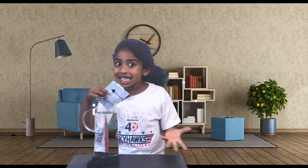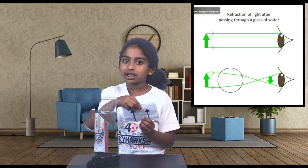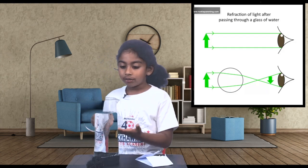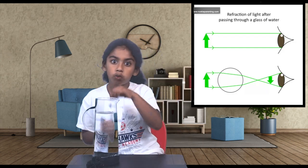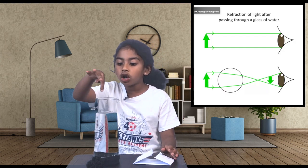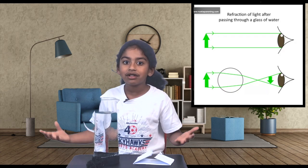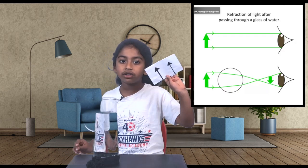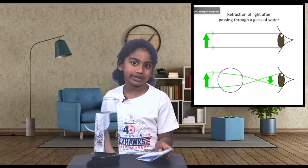Now I'll explain about this. So normally when you just look at this paper like this, all the light waves just go straight into the air. But when you put it behind the water, the light waves are going through one layer of glass, then water, then another layer of glass. That's why this turned upside down or sideways or something.